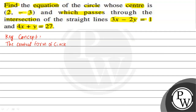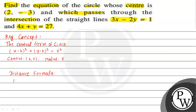The center form of a circle is given by (x minus h) whole square plus (y minus k) whole square equals r square, where the center coordinates are h and k, and the radius is r. The second concept we need to use is the distance formula. If there are two coordinates A(x1, y1) and B(x2, y2), the distance between A and B is given by AB equals square root of (x2 minus x1) whole square plus (y2 minus y1) whole square.